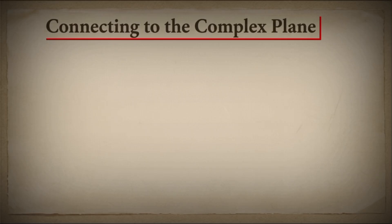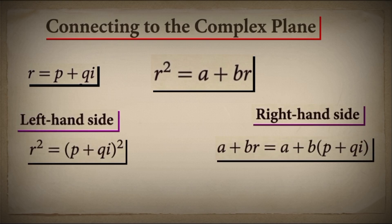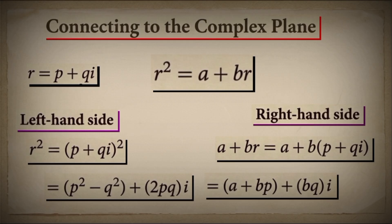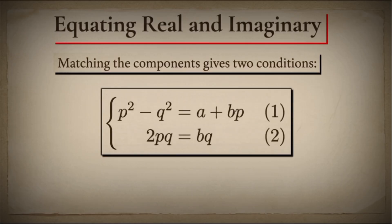Our system is algebraically consistent. Now comes a bold assumption: let's assume that our abstract symbol R can actually be represented by a complex number. We write R equals P plus Qi, where P and Q are real numbers and i is the imaginary unit. We substitute this into our fundamental rule, R squared equals A plus BR. When we expand the left side using P plus Qi squared and equate it to the right side, we get P squared minus Q squared plus 2PQ times i equals A plus BP plus BQ times i. By equating the real and imaginary parts separately, we obtain a system of two equations. From the imaginary part: 2PQ equals BQ. From the real part: P squared minus Q squared equals A plus BP.